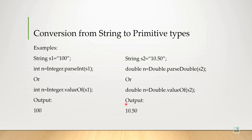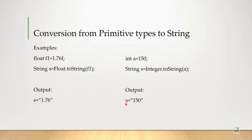Next is, how we can convert any primitive type to string. Suppose, we have a float variable, float f1 equal to 1.76f. Do you know why I am writing f beside the variable float?